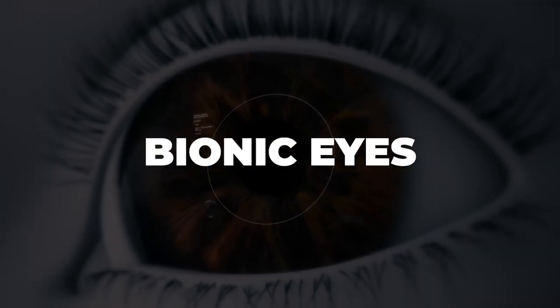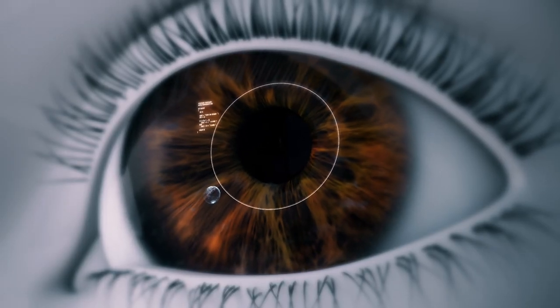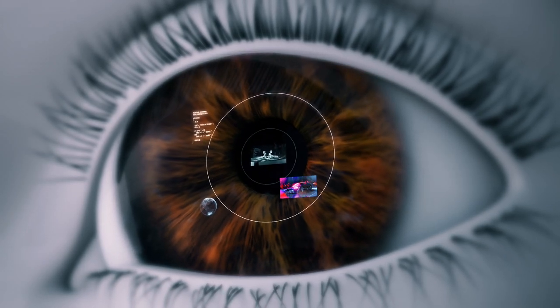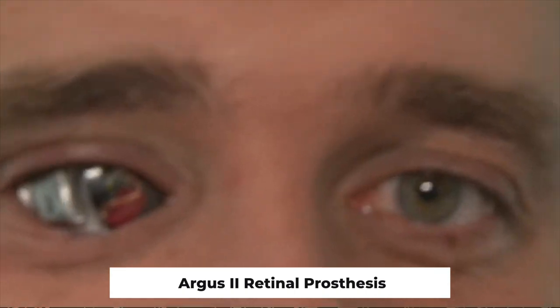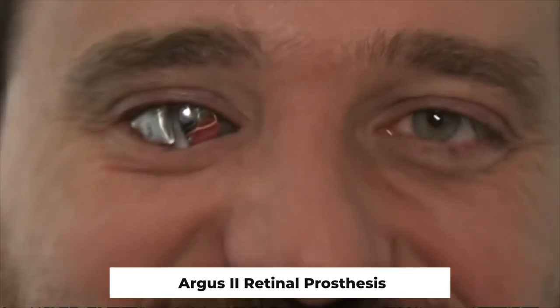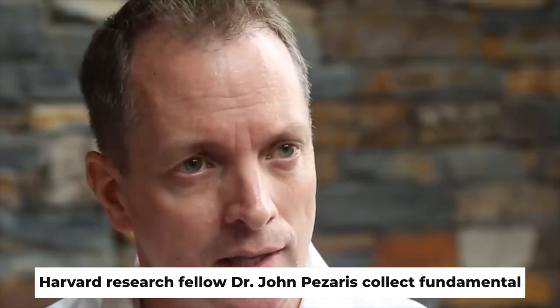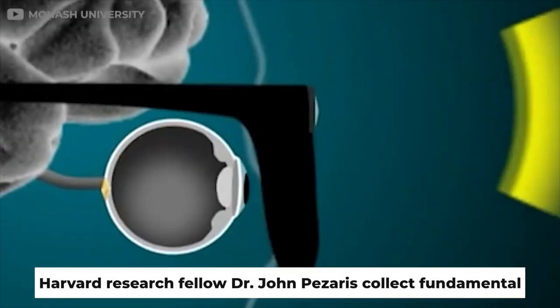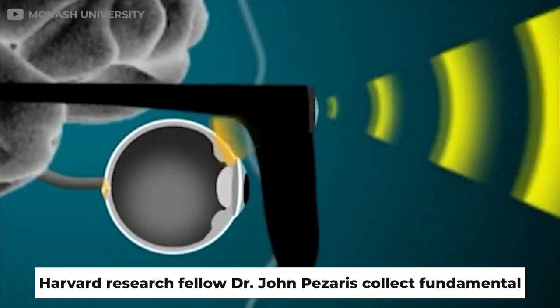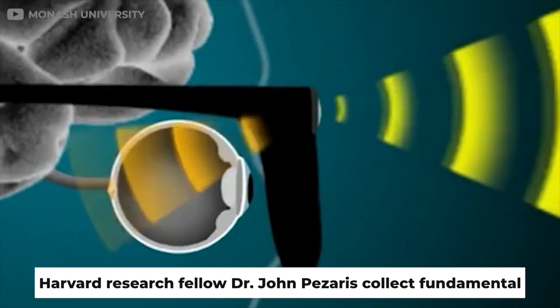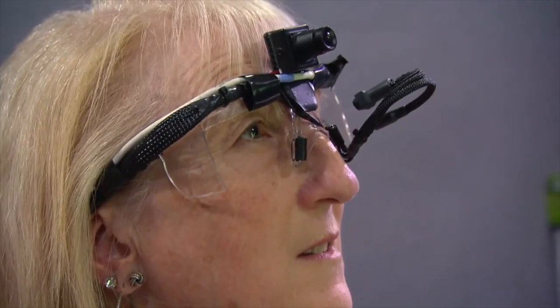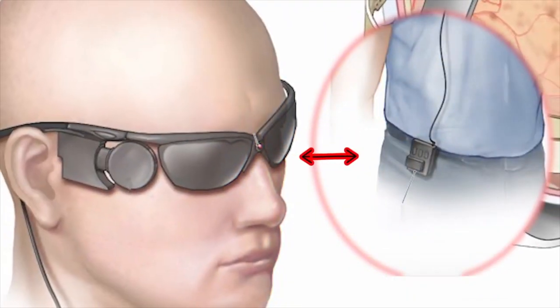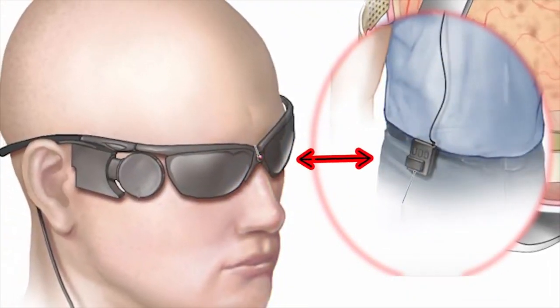Number 10: Bionic Eyes. Being able to see even the most fundamental aspects of life, movement and form, may make a huge impact when you're blind. Both the Argus II retinal prosthesis, which is now through FDA testing, and a device designed by Harvard research fellow Dr. John Pizaris, collect fundamental visual information via camera, convert it to electrical impulses, and deliver it directly to implanted electrodes. The Argus II is a device that employs electrodes implanted in the eye to aid patients who have lost some retinal function.